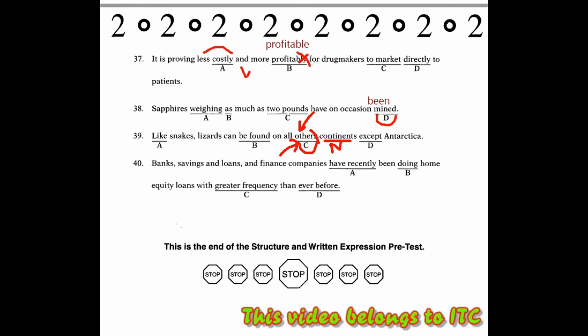Then in section number 40. Savings and loans and finance companies have recently been. It should be part B. So what should the answer be here? It should be 'have been making', have been making, not have been doing. Making home, making home equity loans, which is making home equity loans, with greater frequency than ever before. So there is indeed the use of 'take', 'make', and 'do', which we must match with the usage of meaning and the phrase used, how to do it. For example, 'do', do homework, not make homework, not take homework.